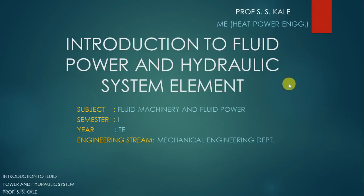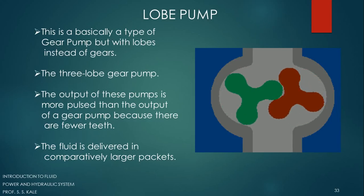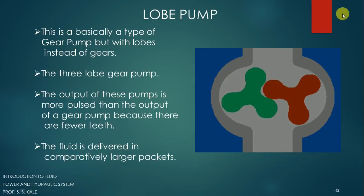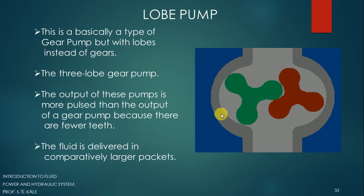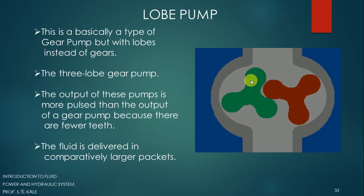Welcome back to this lecture on the introduction to load power and hydraulic system elements. In this lecture we are going to see two types of pump. The first pump is the lobe pump, which is quite easy to understand — it's very similar to the external gear pump. Instead of two gears in mesh, what we use here are lobes. This particular pump is called a three-lobe pump because there are three lobes present on it.